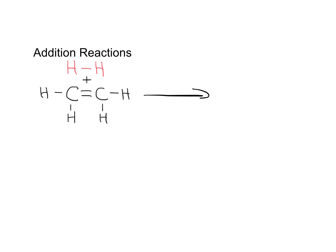This is a short revision lesson on how to do addition reactions. The most basic type is adding hydrogen to ethene. There are two reactants, one of which is unsaturated. In an addition reaction, you've got an unsaturated compound, and an unsaturated compound means that there is a double bond inside it.